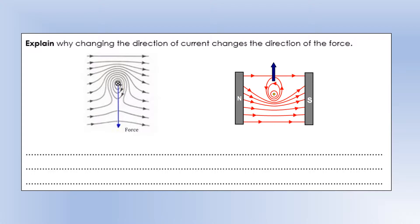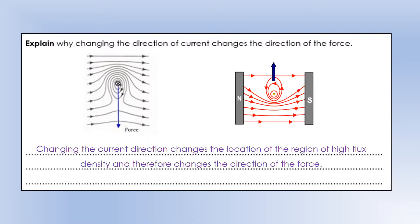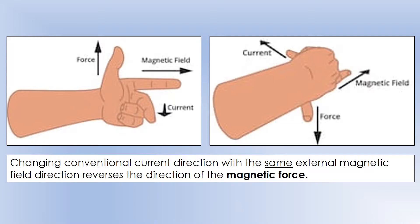You can see the region with the highest flux density switches from being above to below, and that's why the force changes direction. That's how we explain it in terms of superposition of fields. We can also explain it using Fleming's Left Hand Rule.